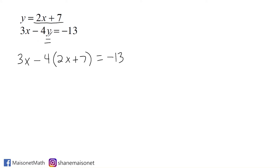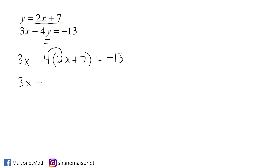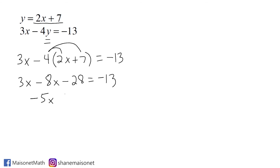When you have an x and a y in an equation you can't solve for either one unless you know the value of one or the other. So we simplify: we write 3x and then distribute the minus 4 to both terms — negative 4 times 2x is negative 8x, and negative 4 times positive 7 is negative 28 — set equal to negative 13. Combining the like terms, 3x minus 8x is negative 5x, minus 28 equals negative 13.